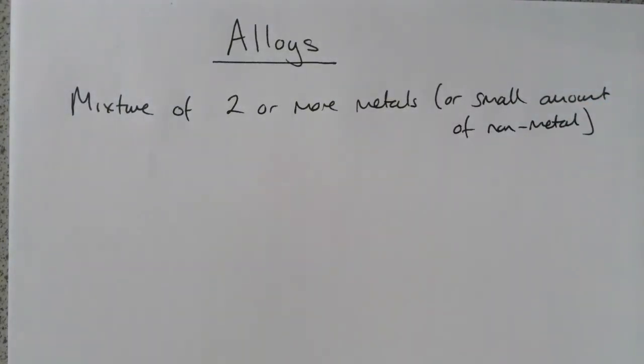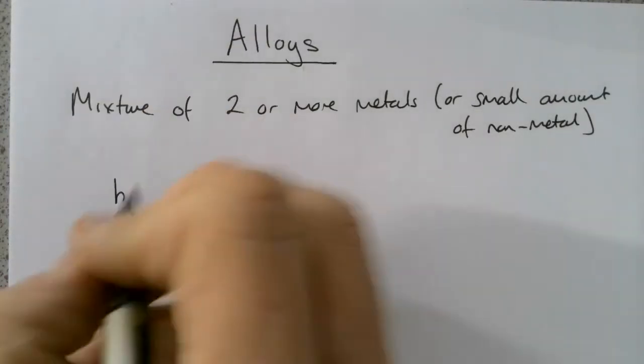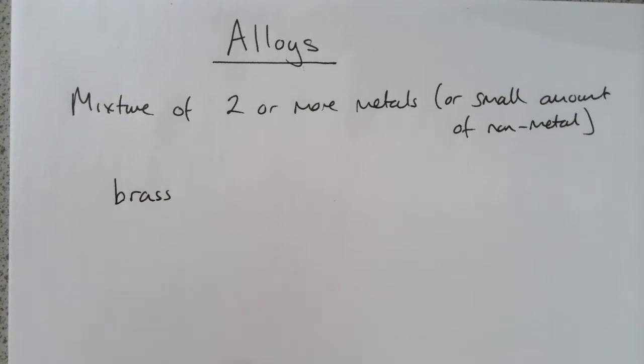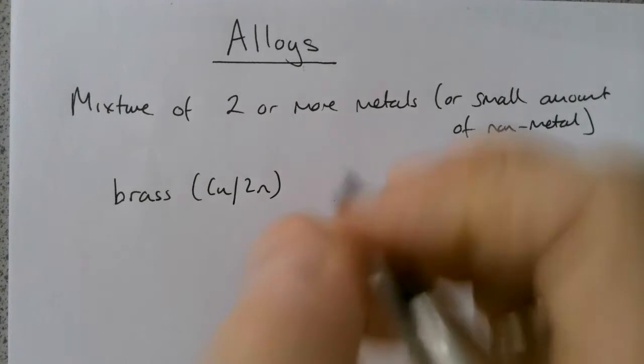Let's think about some examples. Brass is an example of an alloy. Brass is a mixture of copper and zinc, about a 60-40 mixture.